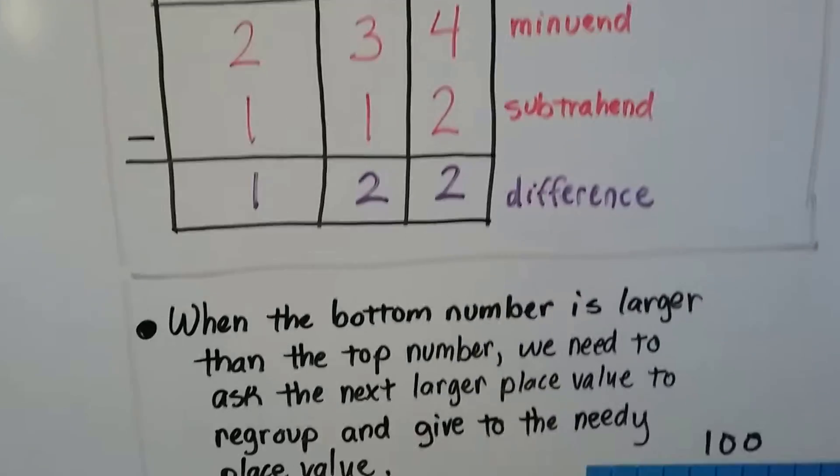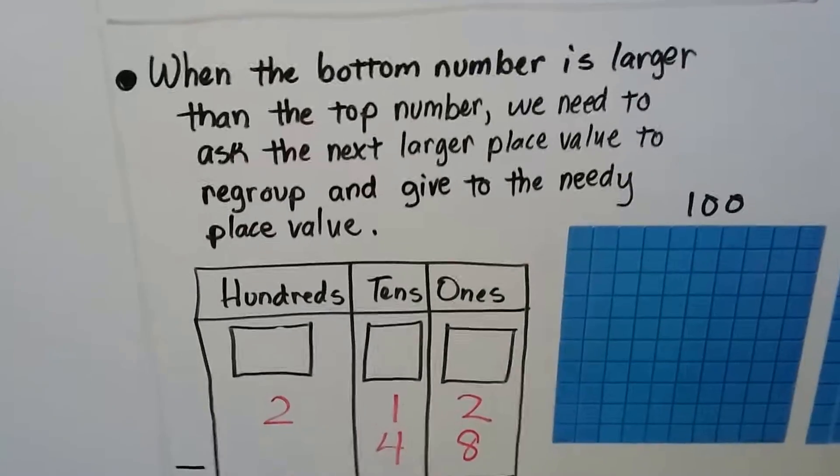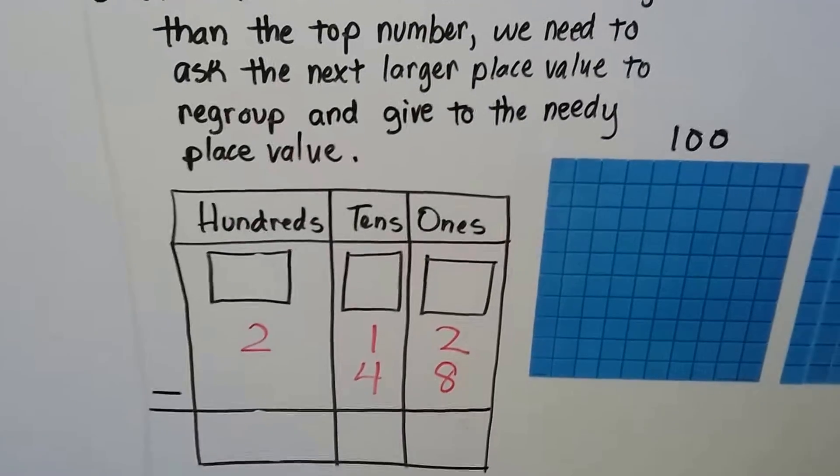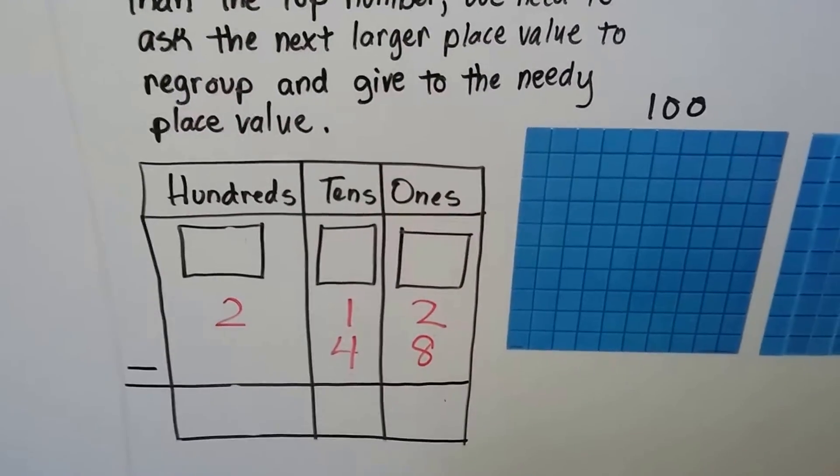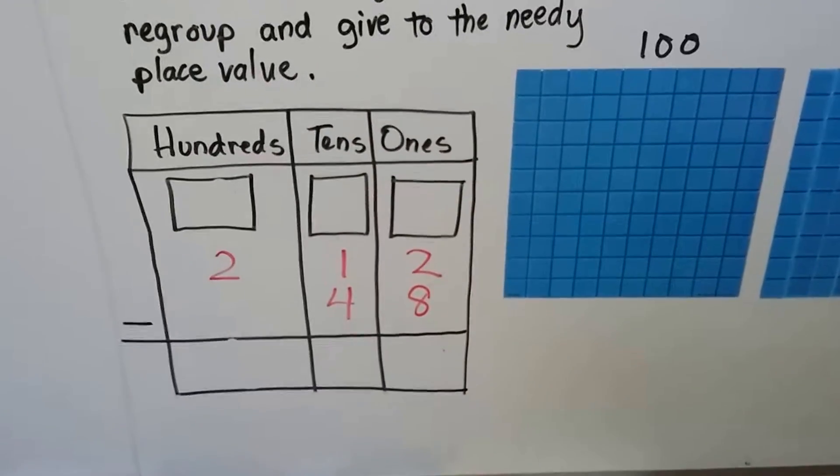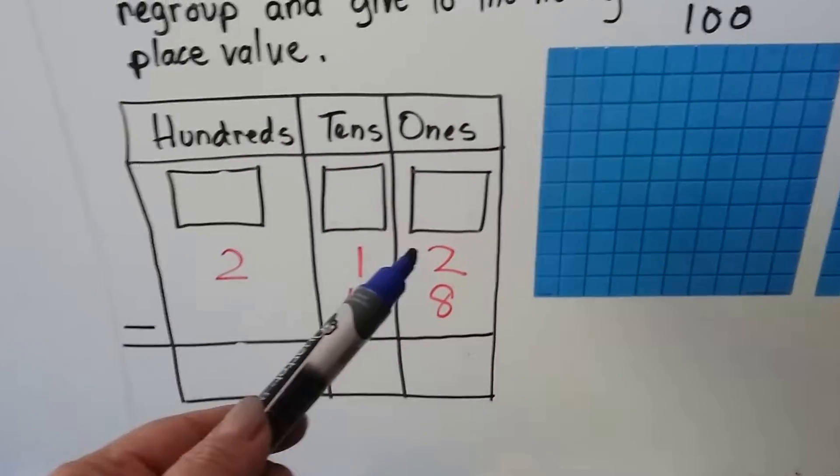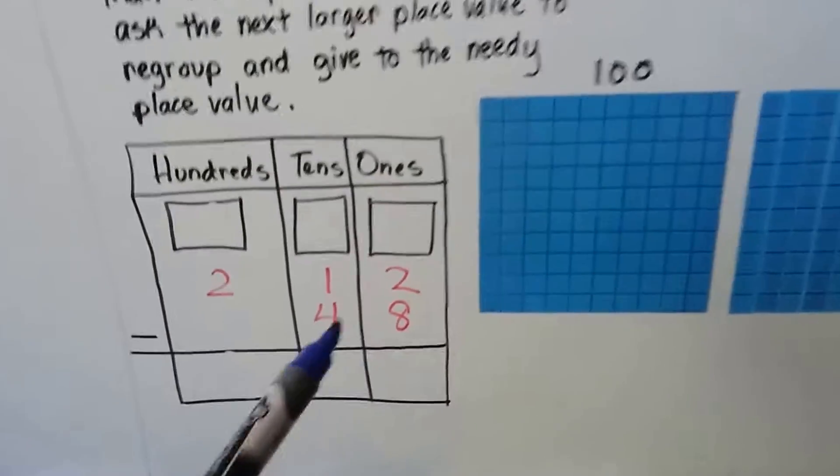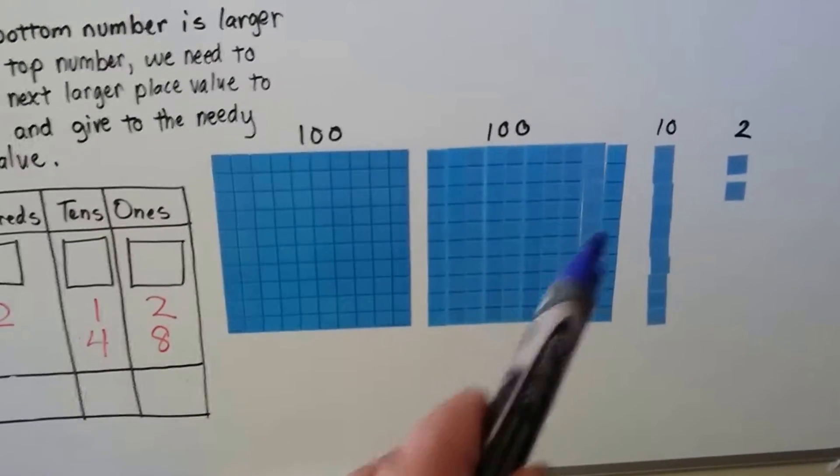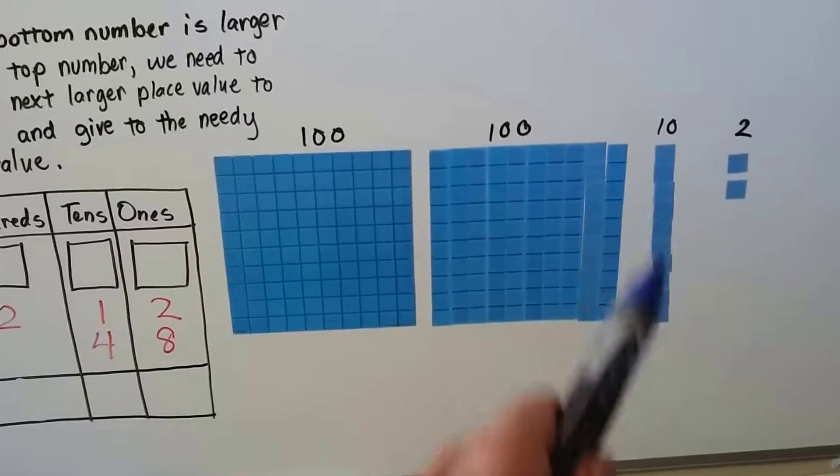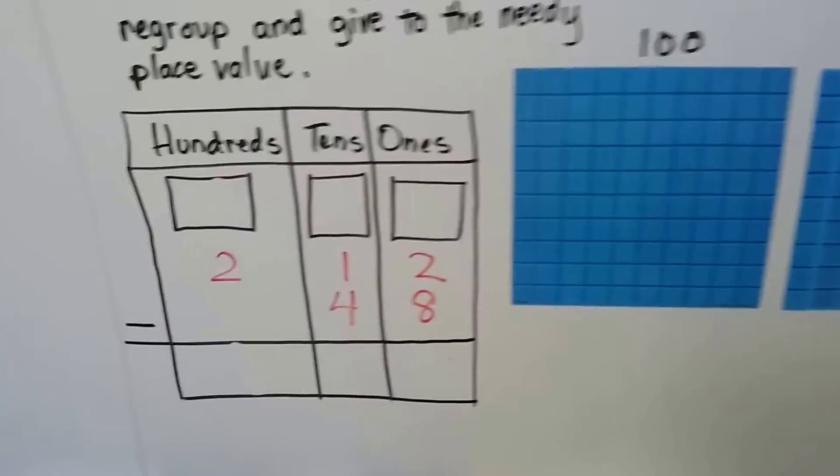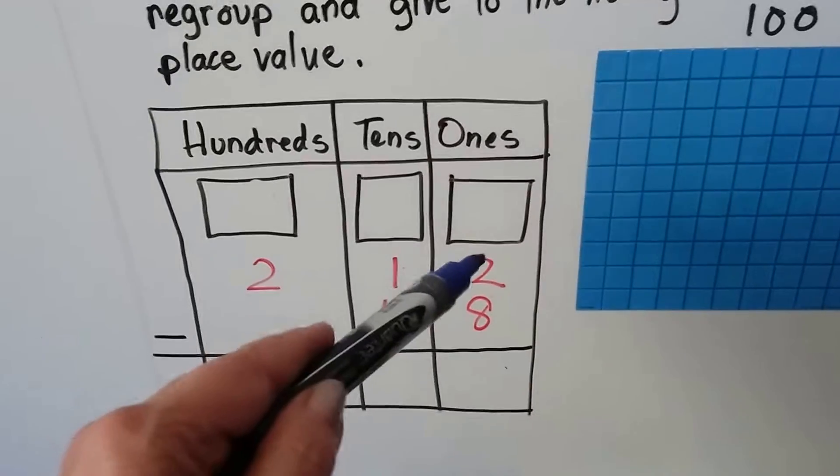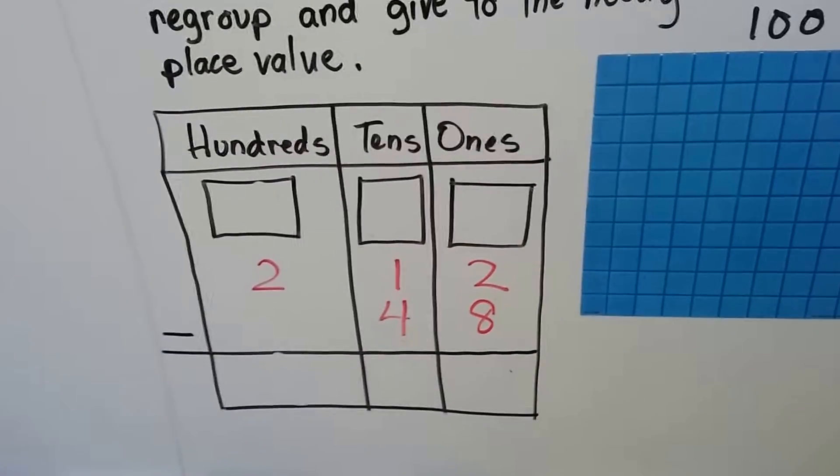Now the tricky part comes in when the bottom number is larger than the top number. We need to ask the next largest place value to regroup and give that needy place value some digits. So if we have 212 and we're taking away 48, so I have 100, 200, 10 and two more. That makes 12. We have 212 and we want to take away 48.